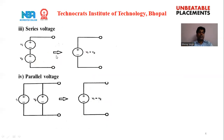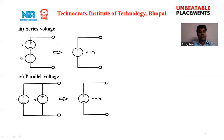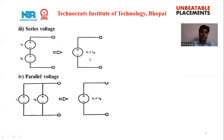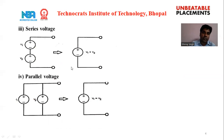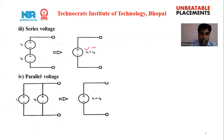The third rule is series voltage sources. If N number of voltage sources are connected in series with the same polarity, then the equivalent can be replaced by a single voltage source. The total voltage V equals the combination of V1 and V2, meaning the voltages are added together.